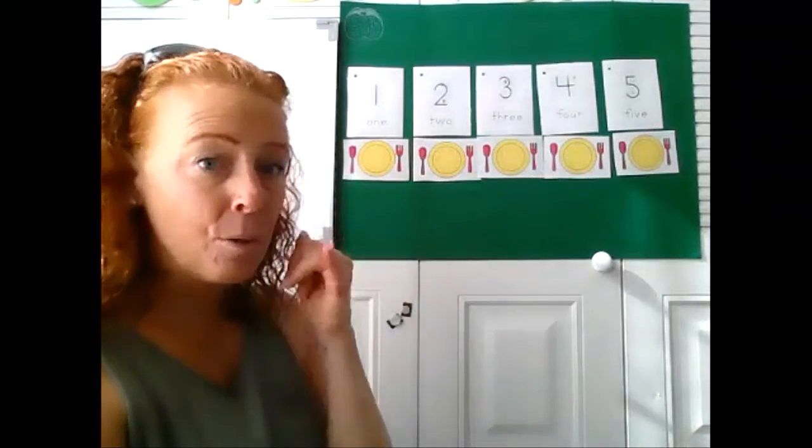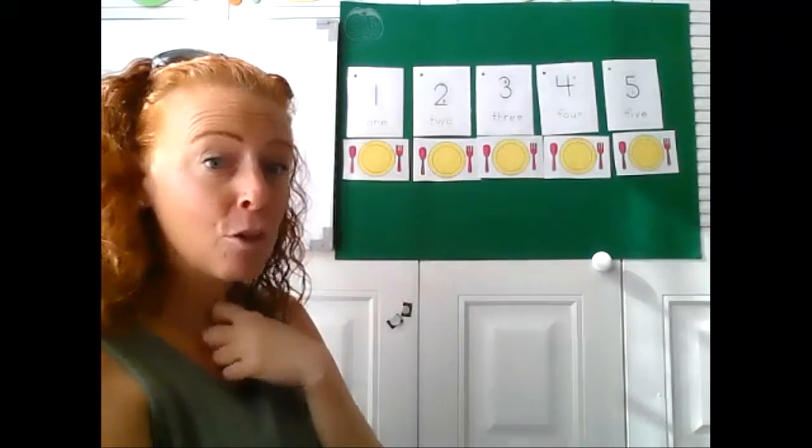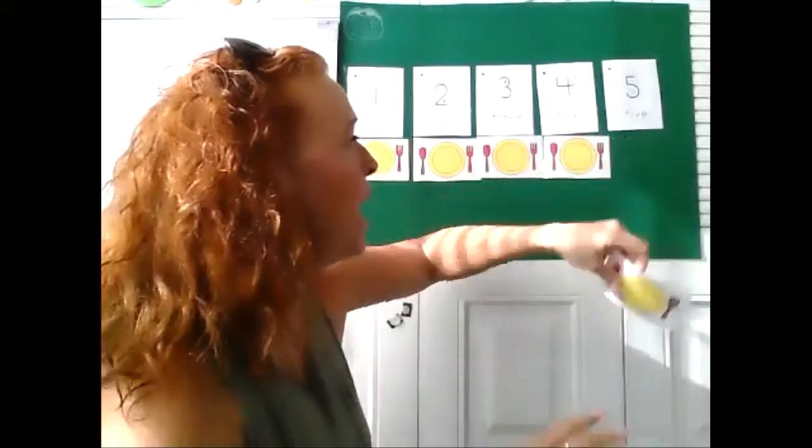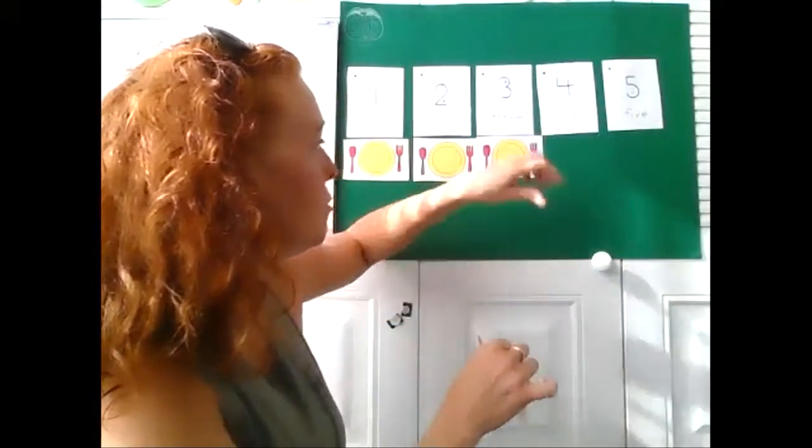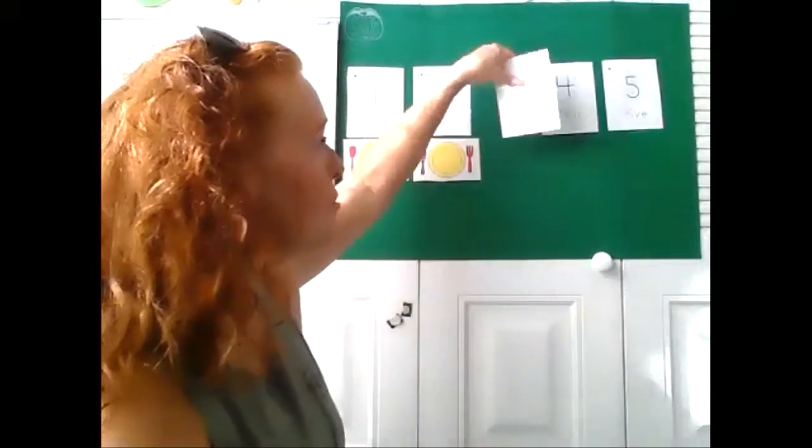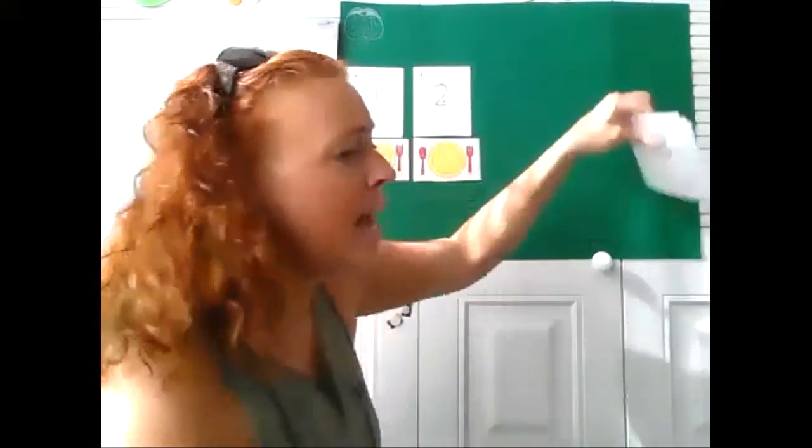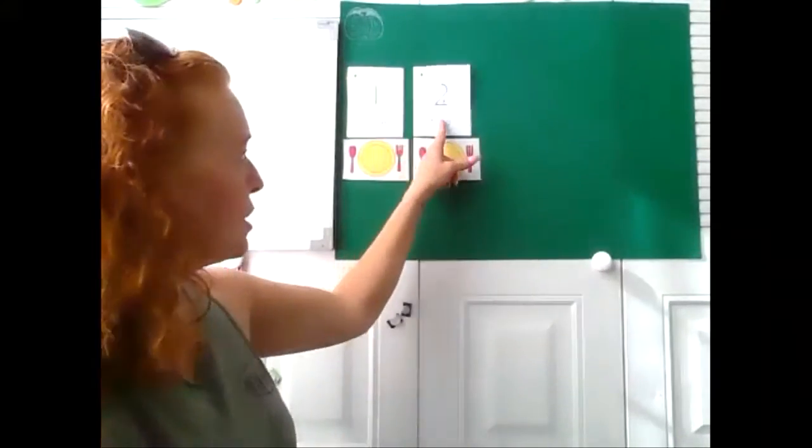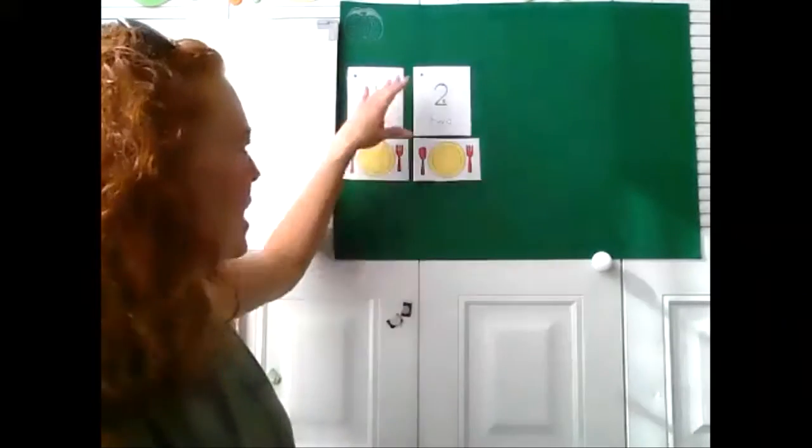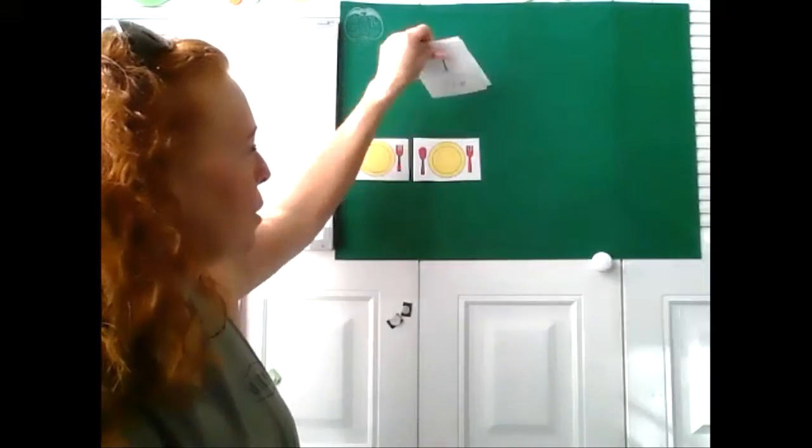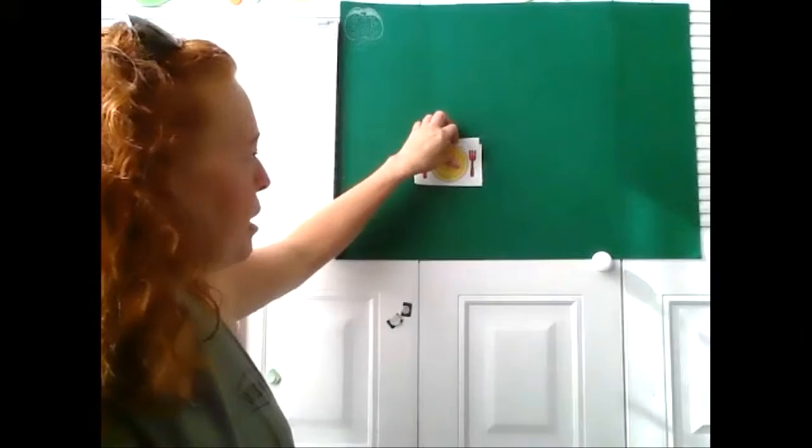But uh-oh, somebody got a phone call. They have to go walk their dog. So now three more friends left. We had five friends and three left. So how many do we have? Yes, two. And they cleaned up and went to bed. So two minus two is zero. They're all gone. They went home.